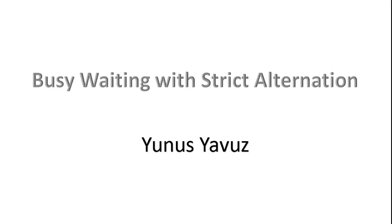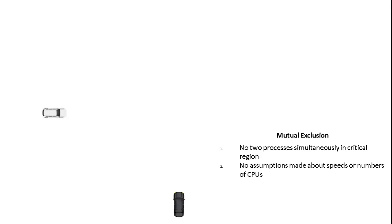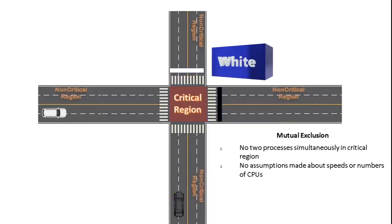In this video I will show you how visualizing with strict alternation works, even if you don't have any idea about operating systems. What we try to achieve is mutual exclusion. The first two conditions are: we don't want two processes in the critical region at the same time, and we cannot make any assumptions about the speeds or the number of CPUs. So instead of two processes, we will use two cars and a four-way road with both critical and non-critical regions, and we have a board which shows who will enter the critical region.